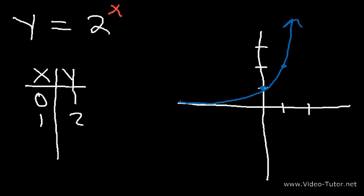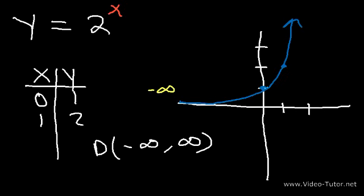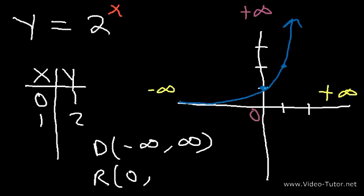Now, what are the domain and range of this function? The domain of any function represents the x values that the function can have. For exponential functions, it's always going to be negative infinity to infinity. There are no restrictions on the value of x — we can plug in any value. Now, what about the range? The range is the y values the function can have. The lowest y value is 0, starting from the horizontal asymptote, and the highest goes up to infinity. So it's from 0 to infinity, but it does not include 0, since no value of x makes y equal to 0.